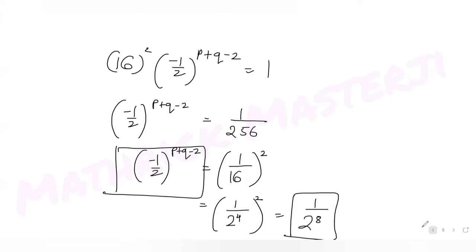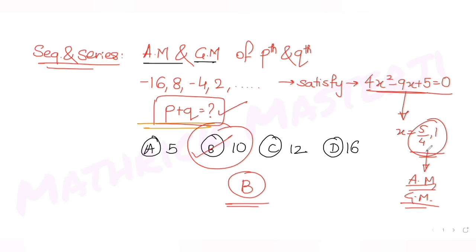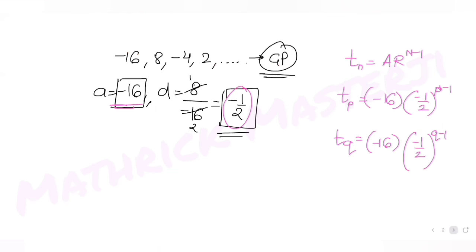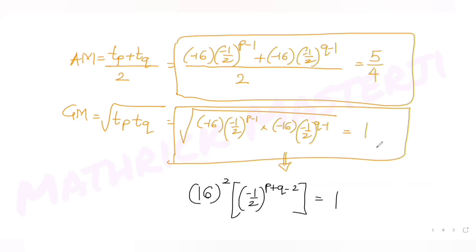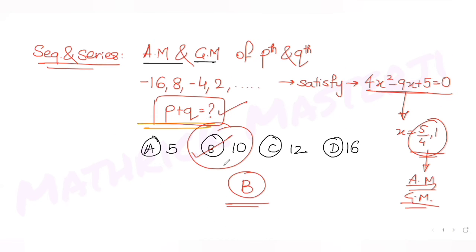The value of p + q is 10, which matches option B. To summarize: we solved the quadratic to find the roots 5/4 and 1, identified AM = 5/4 and GM = 1 using the AM ≥ GM property, then used the geometric mean equation to solve for p + q = 10. Option B is the correct answer.